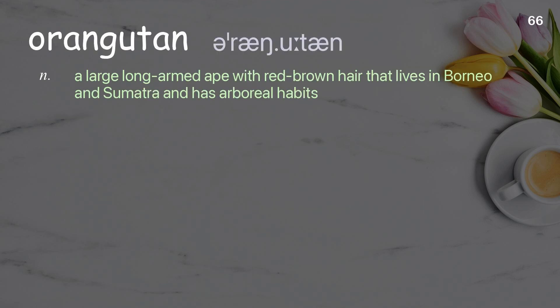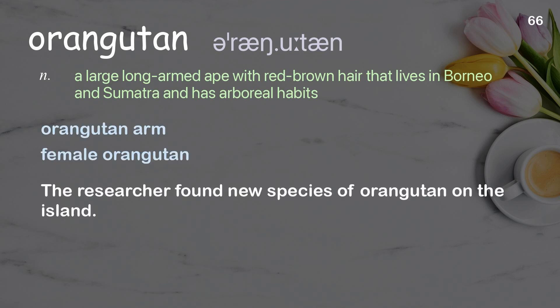Orangutan: a large long-armed ape with red-brown hair that lives in Borneo and Sumatra and has arboreal habits. Examples: orangutan arm, female orangutan. The researcher found a new species of orangutan on the island.